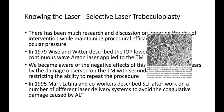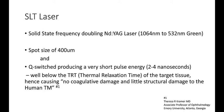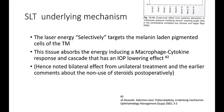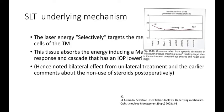Here is an example of an electron micrograph showing the minimal damage after the application of SLT. This is a solid-state, frequency-doubling neodymium laser with a spot size of 400 microns, Q-switched, producing a very short pulse energy, causing no coagulative damage and little structural damage to the human trabecular meshwork. The laser energy selectively targets the melanin-laden pigment cells of the TM. This tissue absorbs the energy, inducing a macrophage cytokine response and cascade that has an IOP-lowering effect — hence the noted bilateral effect from our studies some years ago.